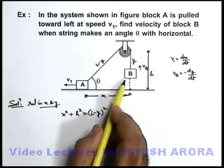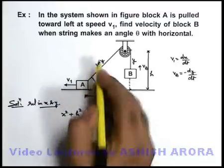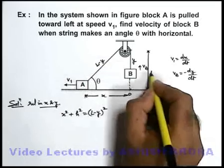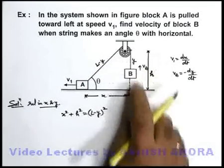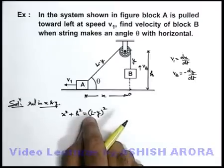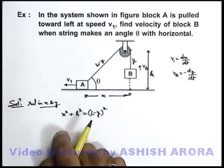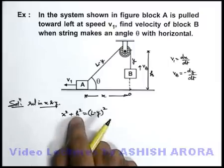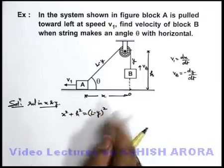You just have a look that two constants I have introduced in solution: one is the length of string, other is the height of pulley above the ground that is h. I can introduce any number of constants because I know that I am going to differentiate this expression, and any constant differentiation will certainly become zero on differentiation.